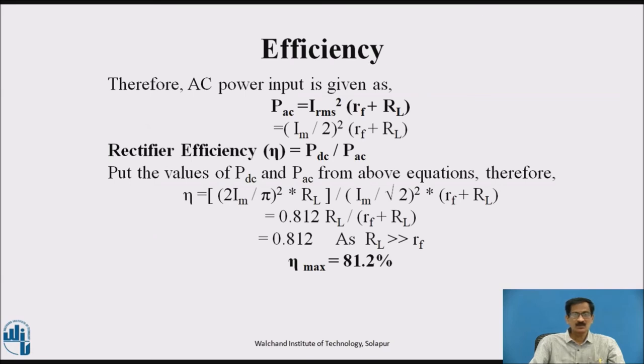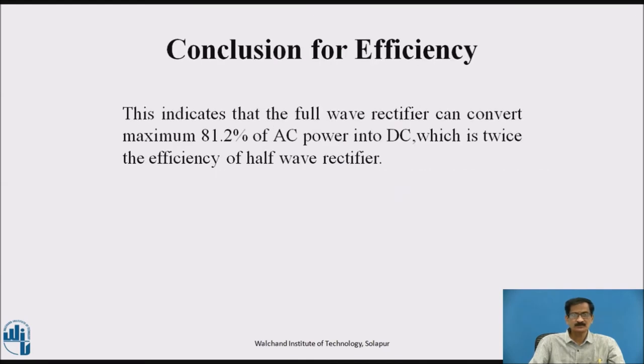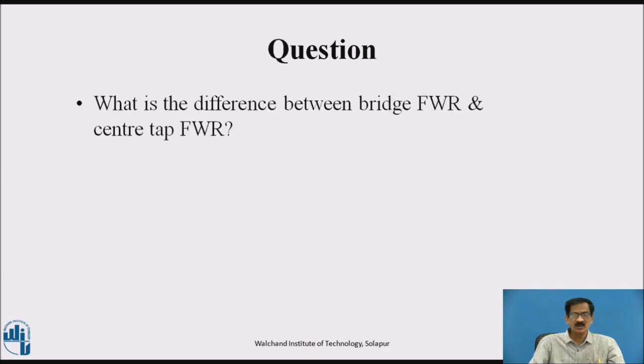Now, let us come to the derivation of efficiency which is Pdc upon Pac, given as Pdc in terms of average value, that is 2 Im upon pi bracket square into RL divided by Pac in terms of RMS value Im upon root 2 bracket square into RF plus RL. This comes out to be 0.812 RL upon RF plus RL. Since RL is very much greater than RF, RL upon RF plus RL equals 1. We got the final efficiency as 81.2%. This indicates the full wave rectifier can convert maximum 81.2% of the AC power into DC, which is twice that of the half wave rectifier.